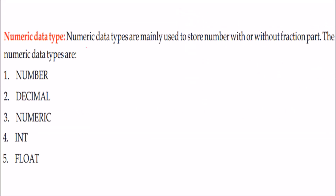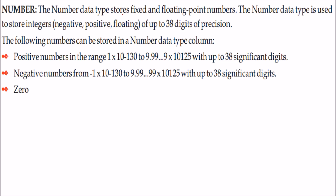Now we come to numeric data types. These are used to store numbers with or without a fractional part. Types include number, decimal, numeric, int, and float. The number data type stores fixed or floating point numbers — it can store integers, negative, positive, or floating values, up to 38 digits of precision. The positive number range is from 1×10⁻¹³² to 9.99×10¹²⁵ with 38 significant digits.